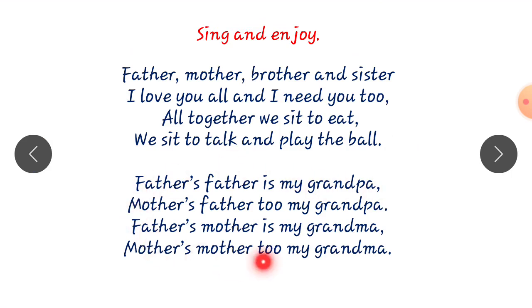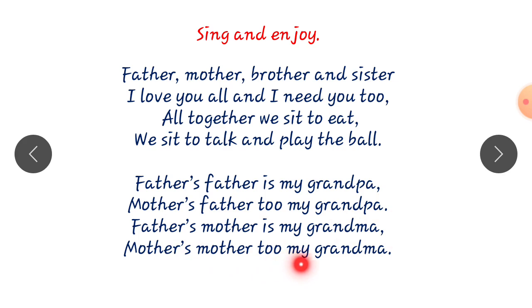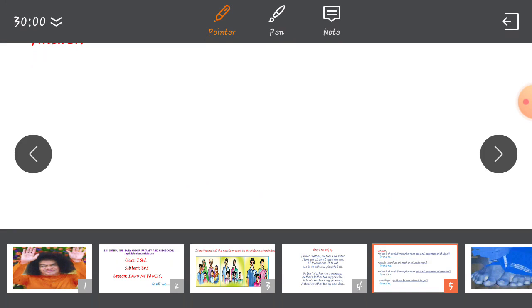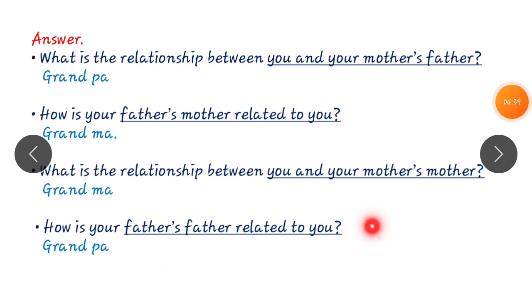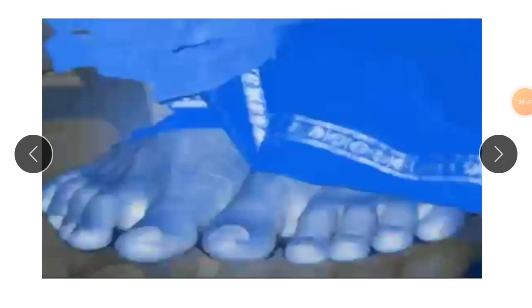Children, observe this rhyme — it is very easy. Father's father is my grandpa. Mother's father is my grandpa. Father's mother is my grandma. Mother's mother is my grandma. We can easily answer these questions. Understood, children? Okay, we continue in the next class. Thank you.